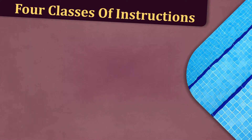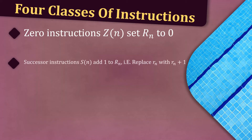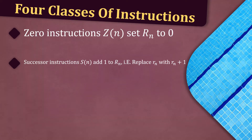First, zero instructions, zn: set rn to 0. Second, successor instructions, sn: add 1 to register rn, i.e. they replace rn with rn plus 1.